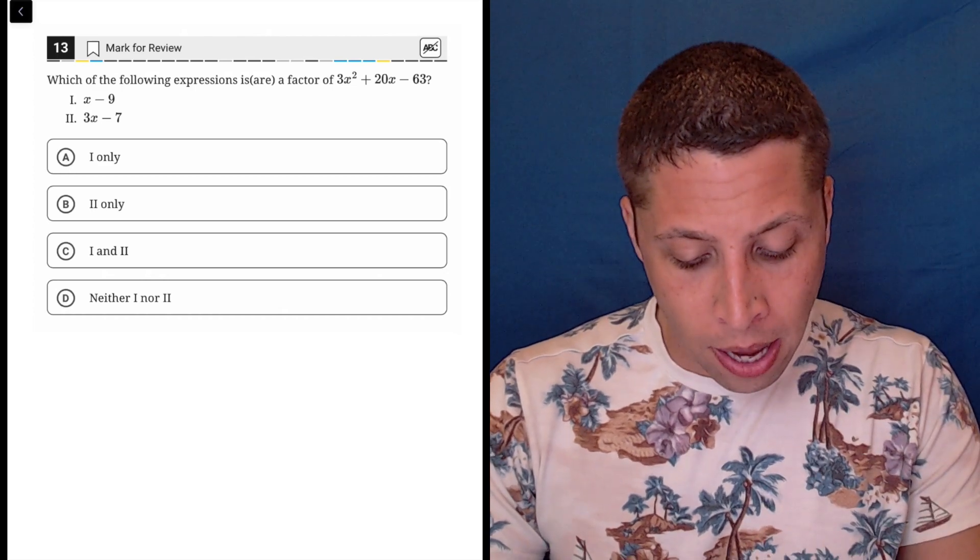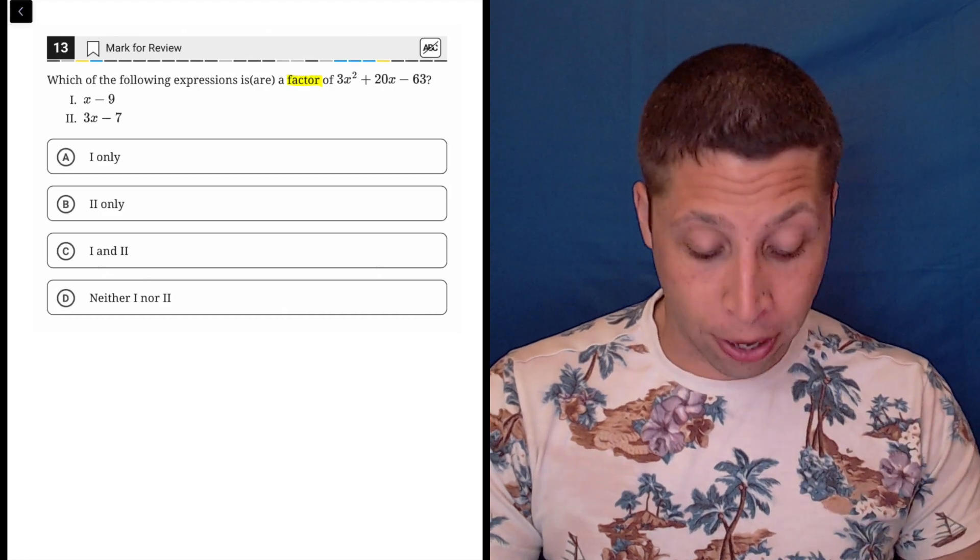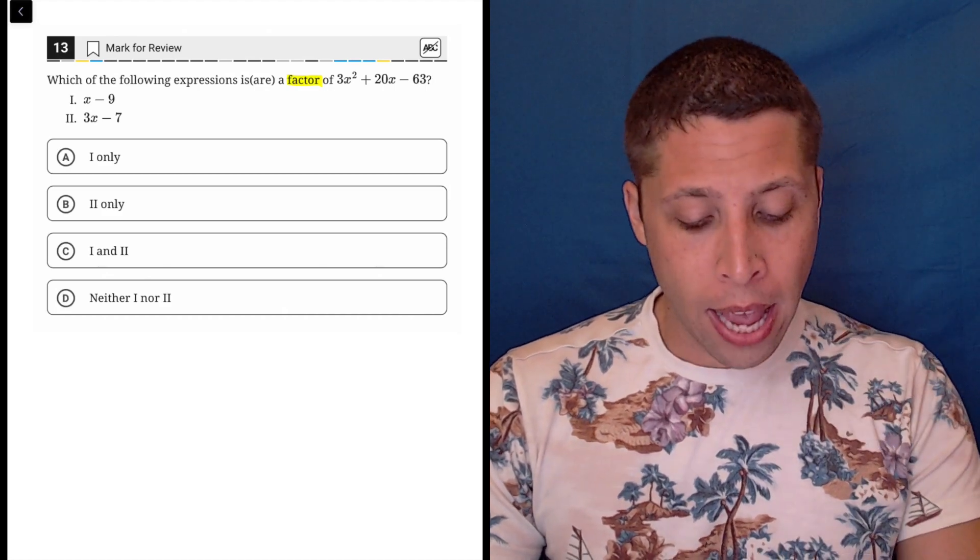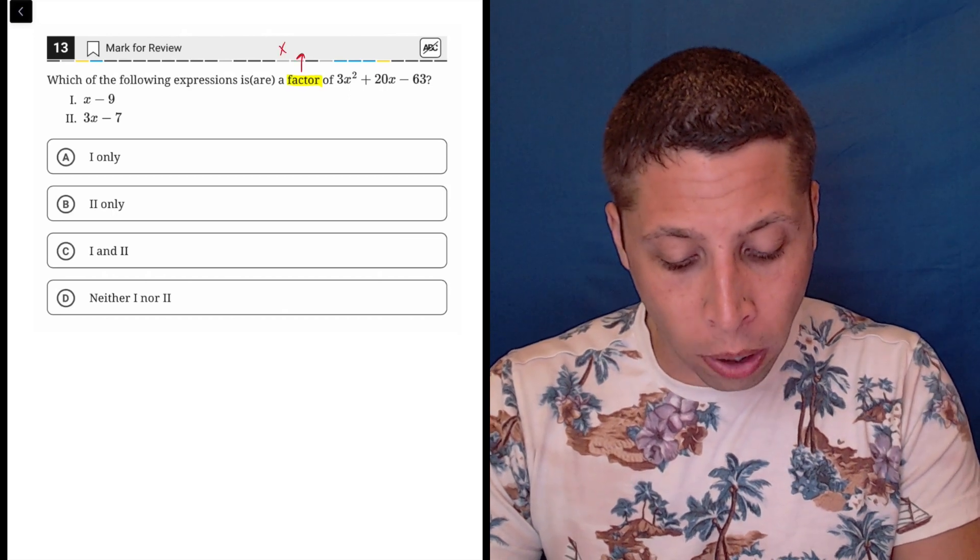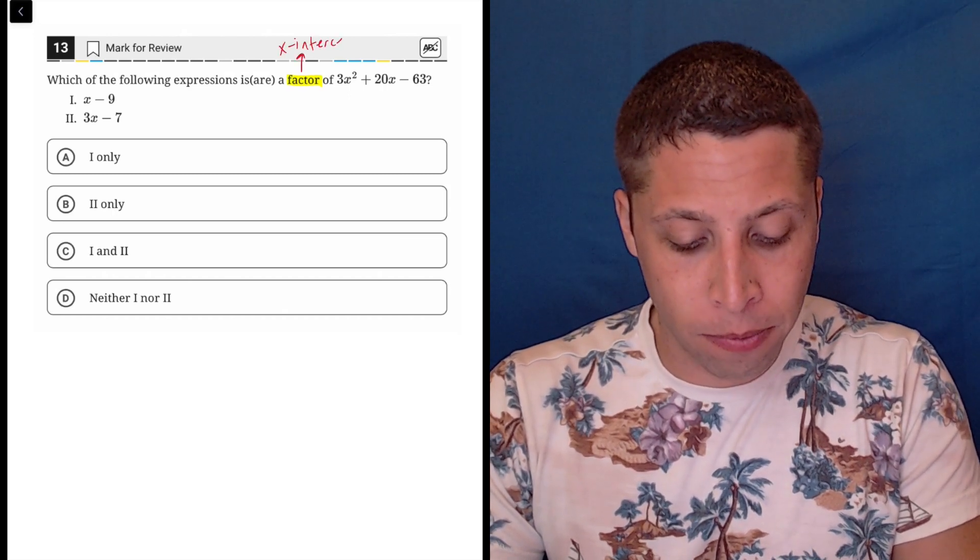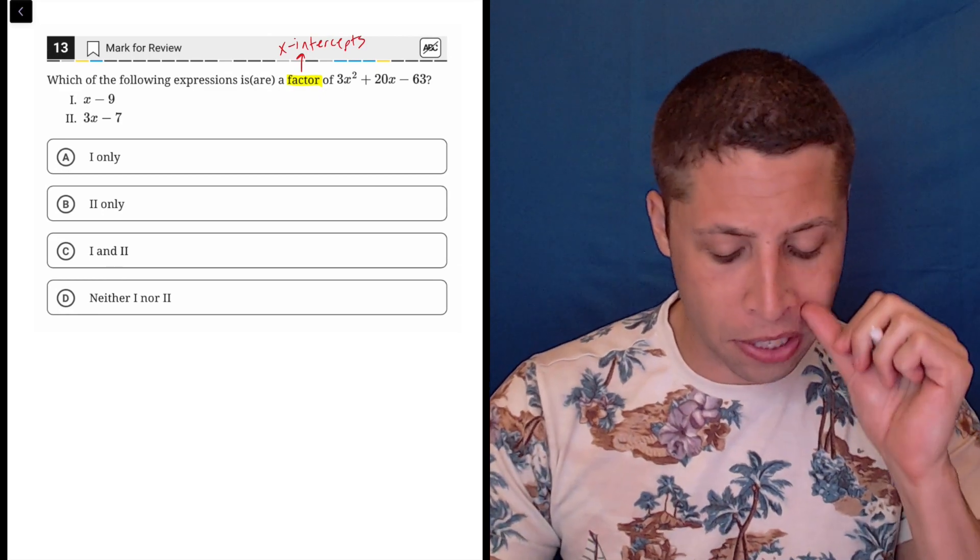The key for me, though, is I know right away what they mean when they're talking about factors. So this is a quadratic equation, and we have a factor that's kind of code for x-intercepts, the parts where the graph is going to cross that x-axis, where y is going to be zero.